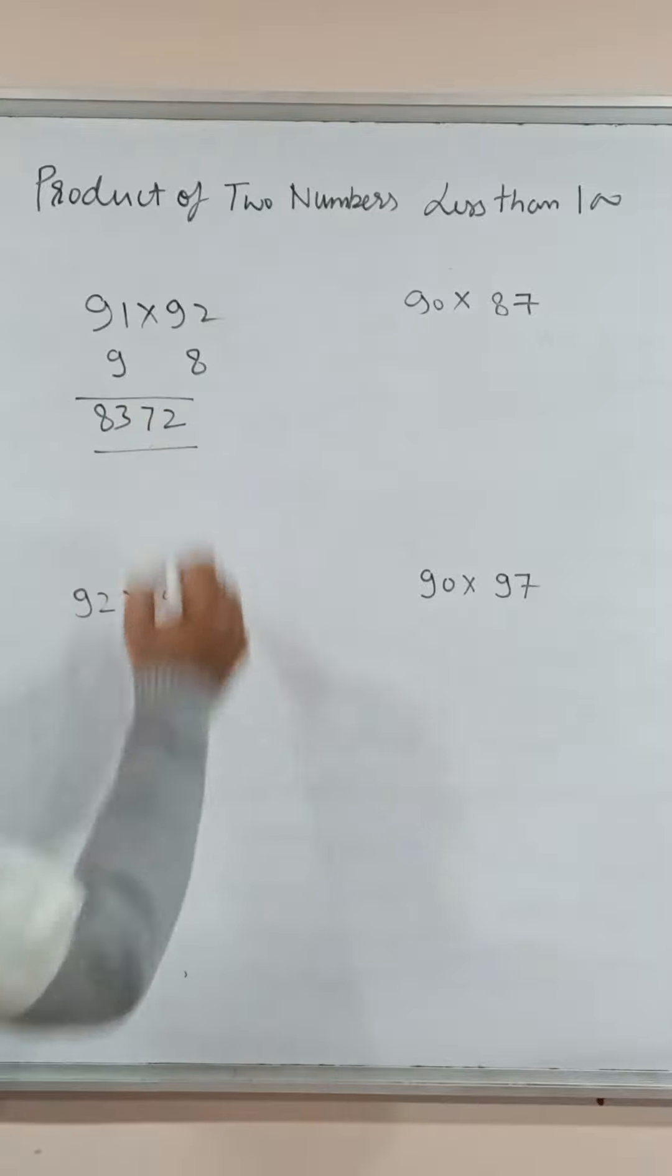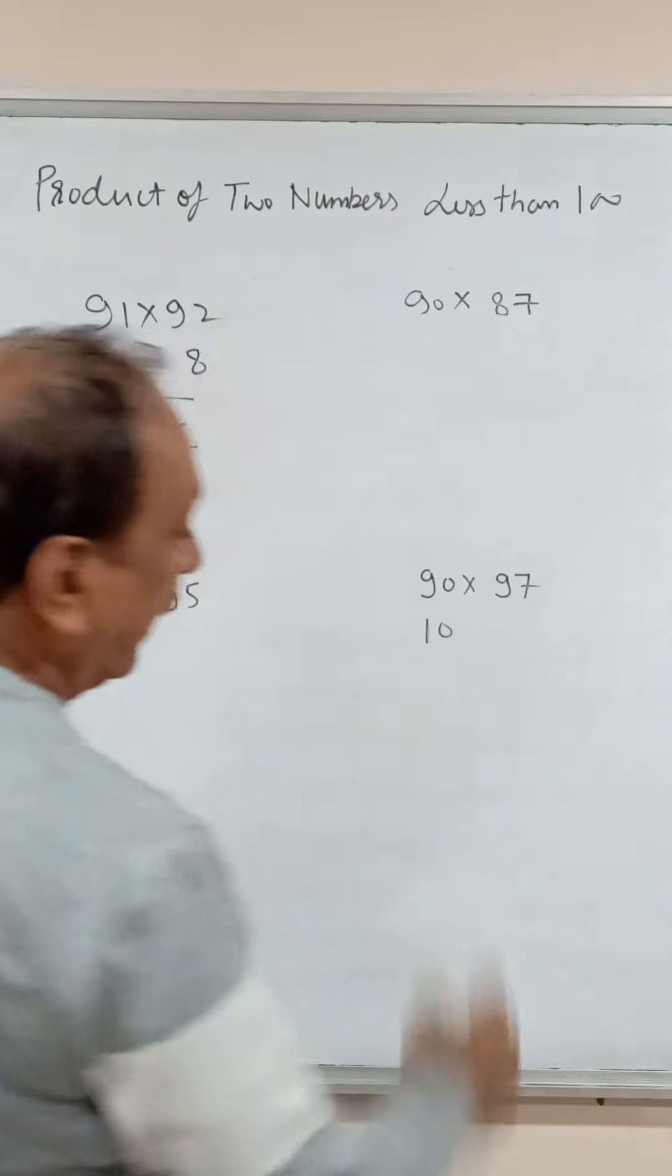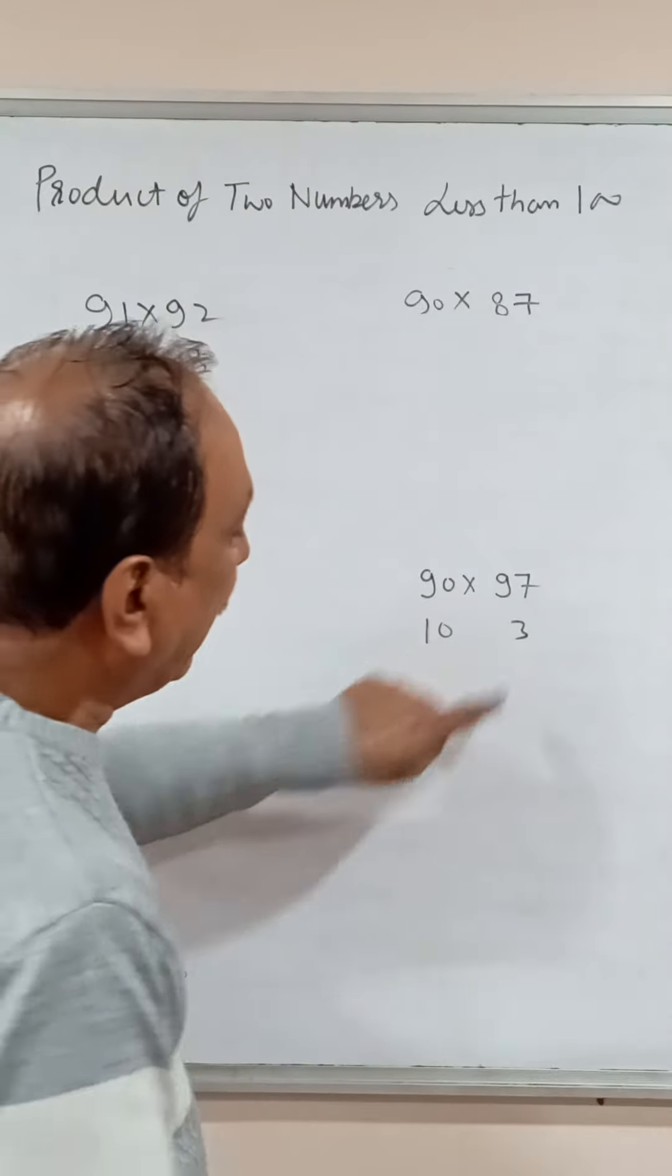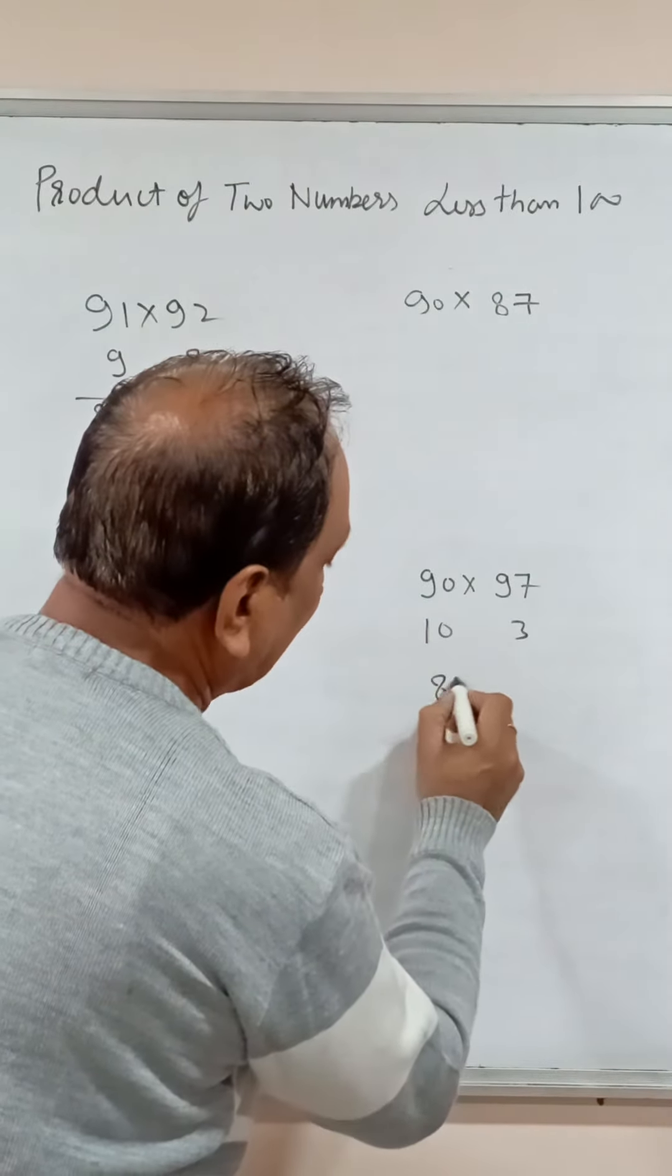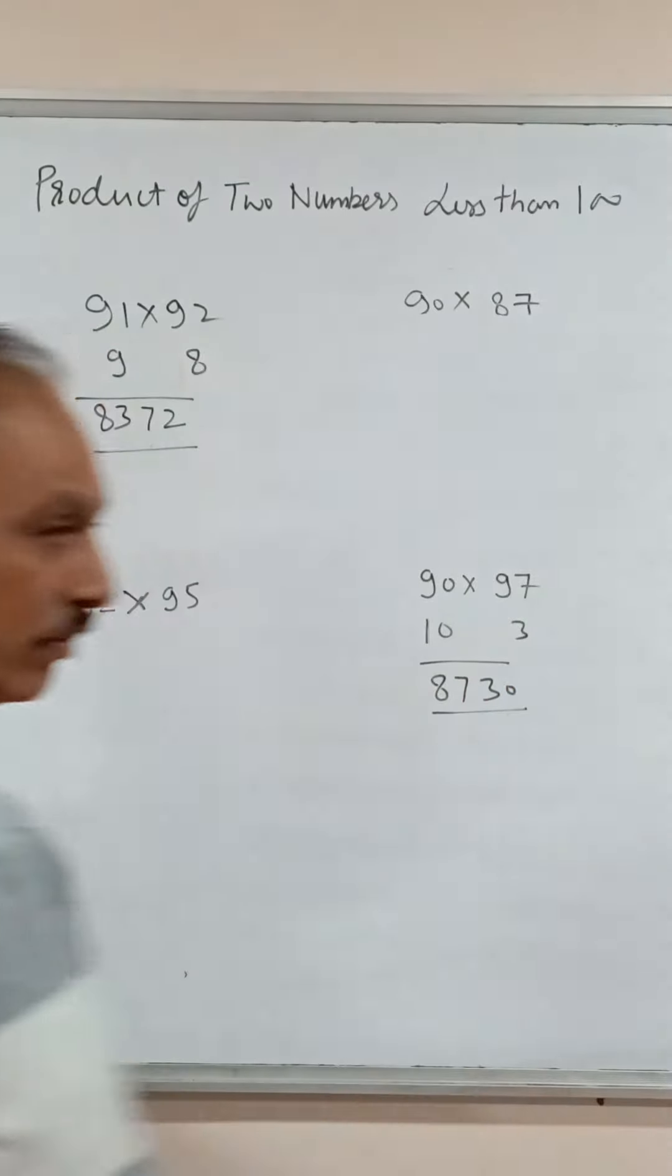This is product of 91 and 92. Next, 90 into 97. This is 10 small and this is 3 small. Same, 90 minus 3 is 87 and 10 times 3 is 30. Product of two numbers.